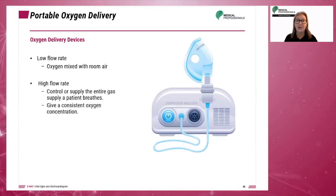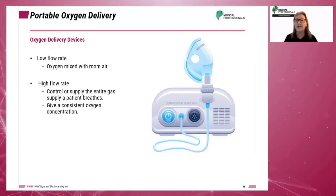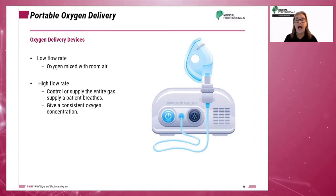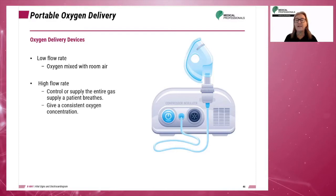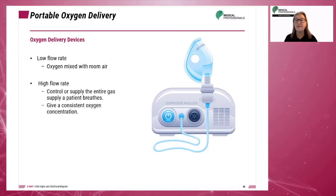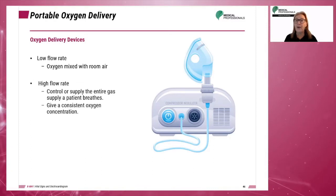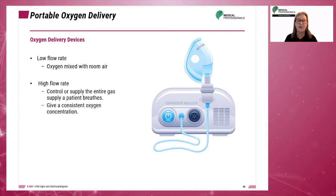There are two classifications of oxygen delivery systems. Low flow rate systems mix oxygen with room air. High flow rate systems control the entire oxygen supply to the patient and give a consistent oxygen concentration. They are run at sufficiently high flow rates or control the percentage of room air mixing with the oxygen supply to achieve a consistent oxygen concentration.